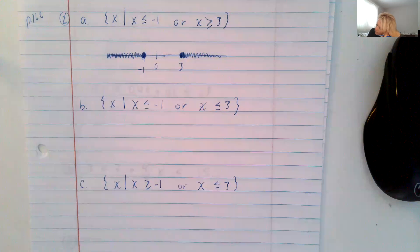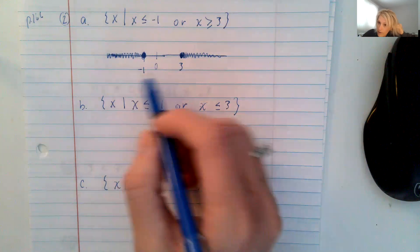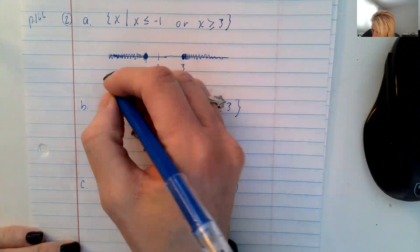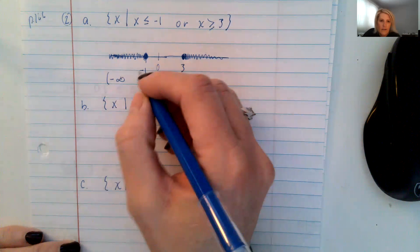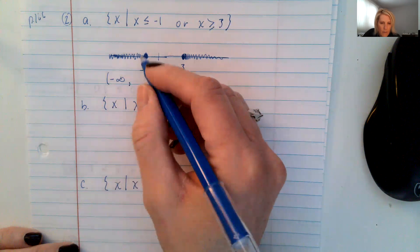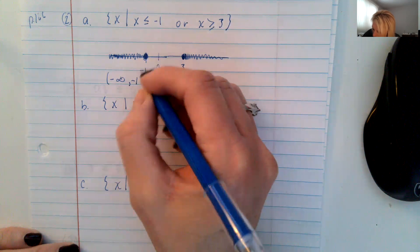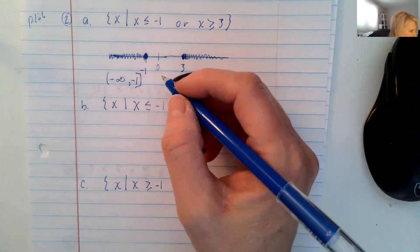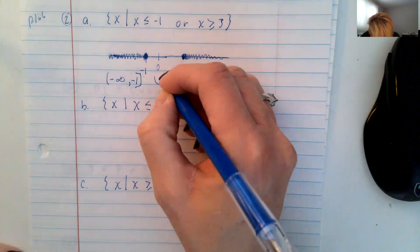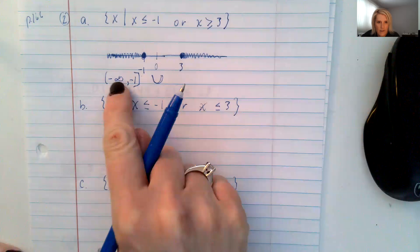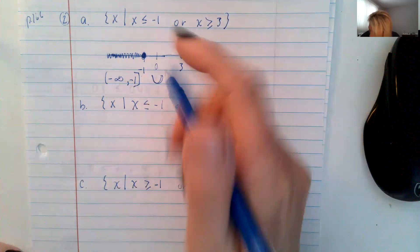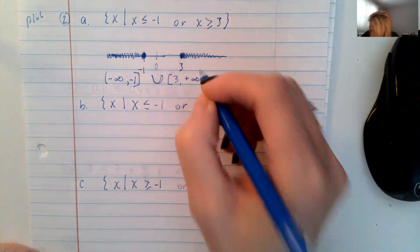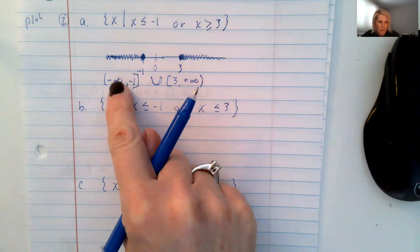Now we're going to put this in interval notation. For the interval on the left, because it's going to the left forever, it's going to be negative infinity comma negative one with a bracket, since it's colored in. Then we use the union symbol, and the right interval has three as the left boundary going to positive infinity. Notice that infinities always get parentheses.